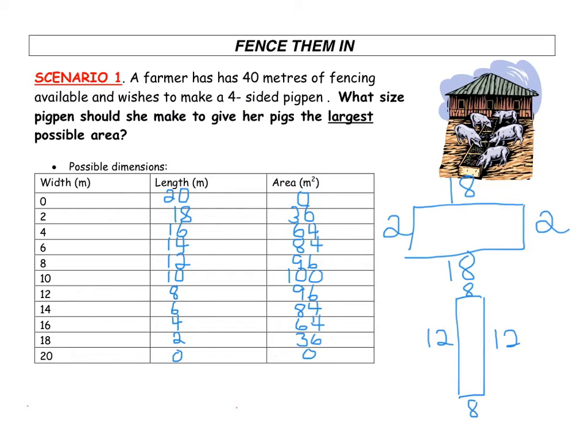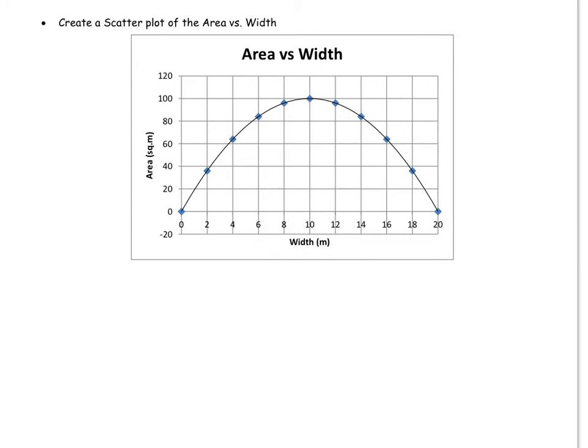So if we create that scatter plot, I want you to have a look. You can see it back here as well that the 100 is our largest possible area. We have our width over here by our area. And it's definitely not linear as we predicted. And we could actually draw a curve of best fit which you can see I already drew on.